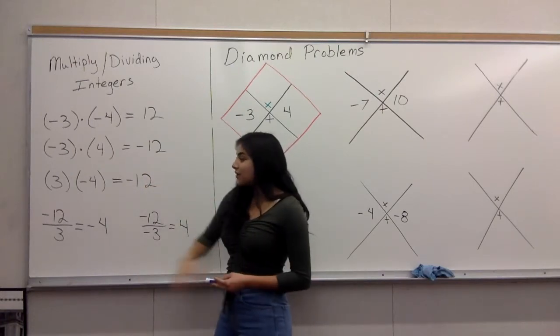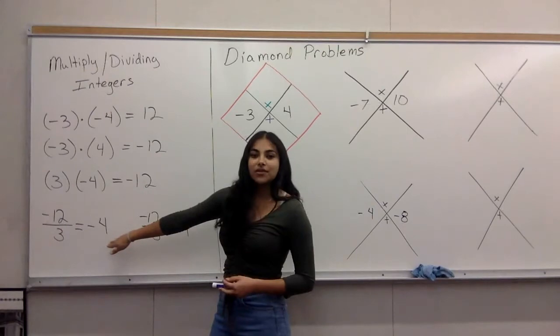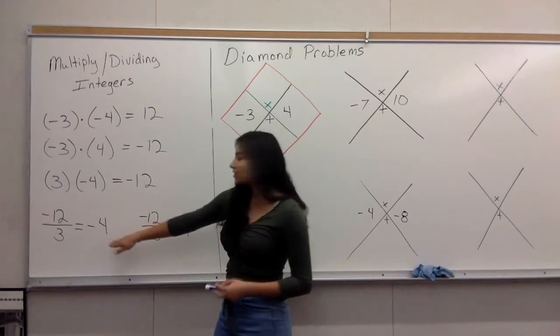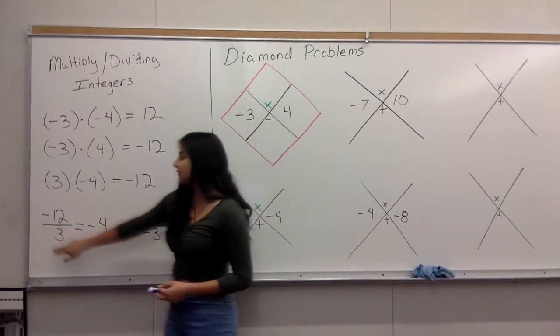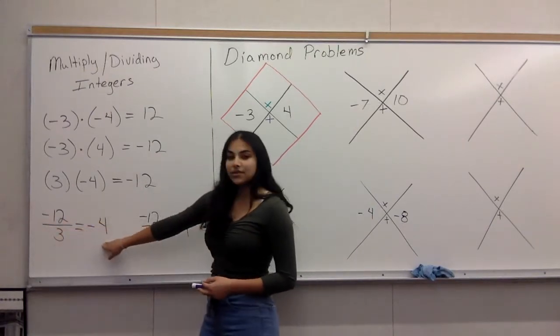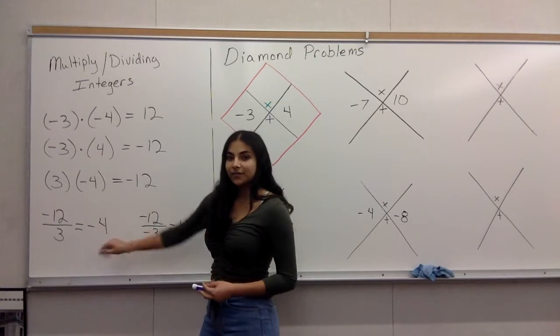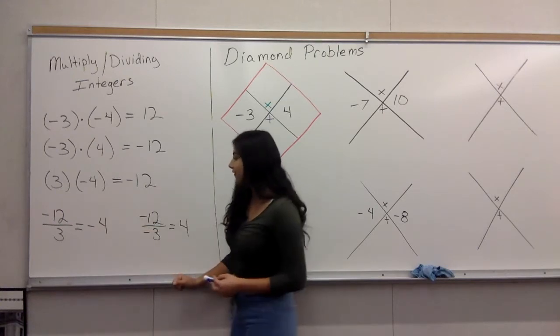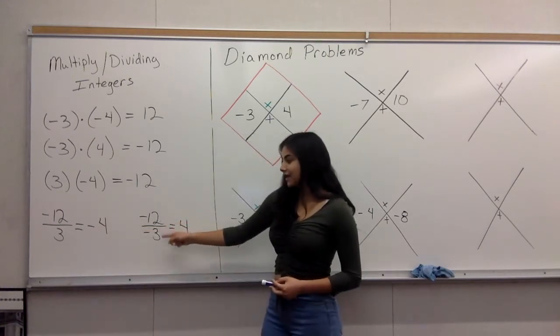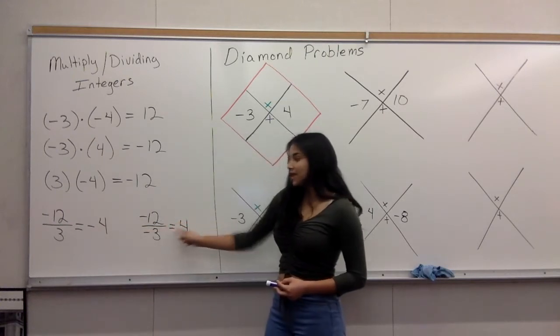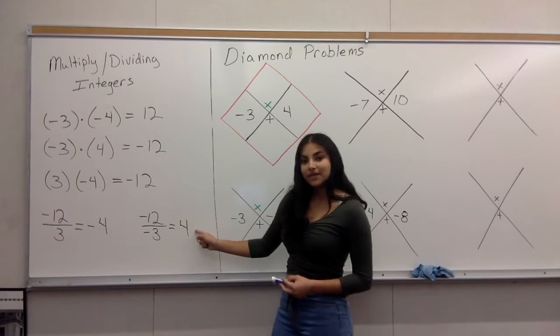The same rules apply to division. If you have a negative dividing a positive, your answer is going to be negative. If you have a negative dividing a negative, your answer is going to be positive.